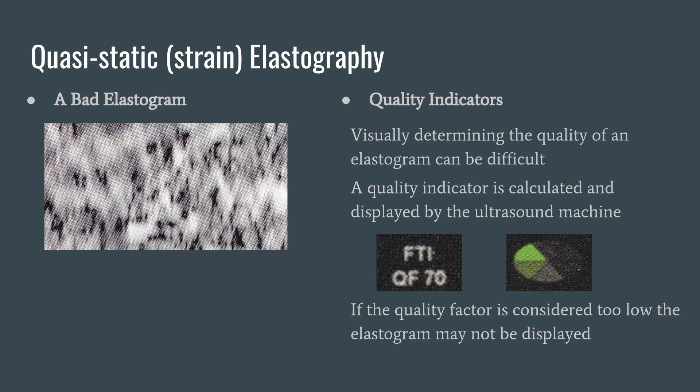A nice thing the ultrasound machine does for us is present a quality indicator on the screen. It does this through complex algorithms and can be displayed as either a number or a piece of a circle. The higher the number, or the more of the circle it covers, the better quality the elastogram. We can then put more trust into the image in determining what's going on in the body. On some machines, if the quality is considered to be too low — for example, less than 70 — it will not display the elastogram, telling the sonographer to try again.